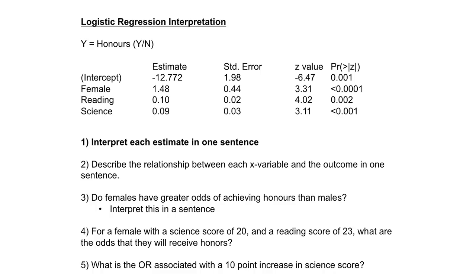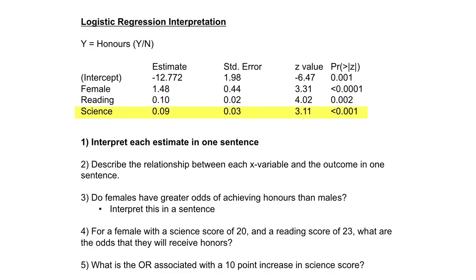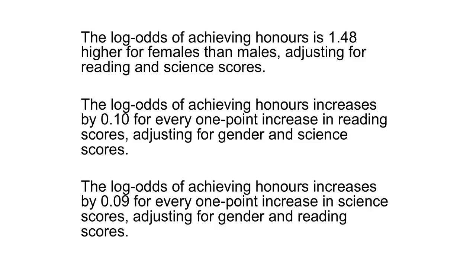For logistic regression interpretations, our outcome is achieving honours (yes vs. no) and explanatory variables are gender, reading, and science scores. The log odds of achieving honours is 1.48 higher for females than males, adjusting for reading and science scores. The log odds of achieving honours increases by 0.10 for every 1-point increase in reading scores, adjusting for gender and science scores. And the log odds increases by 0.09 for every 1-point increase in science scores, adjusting for gender and reading scores.